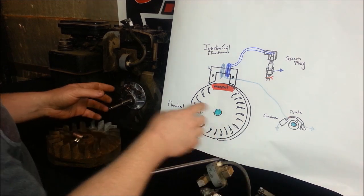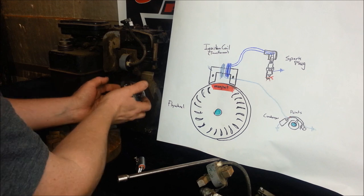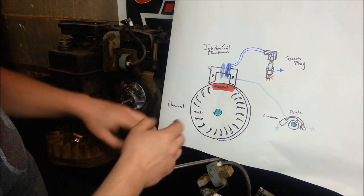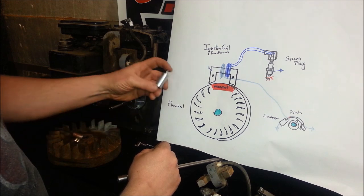Down below our flywheel, down in here, we have our points and our condenser. They're not always here. Sometimes they're on the side of the engines. It doesn't really matter. This is what this one looks like in there. This is our condenser.